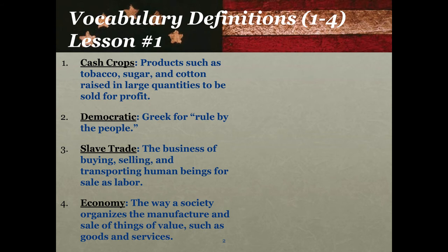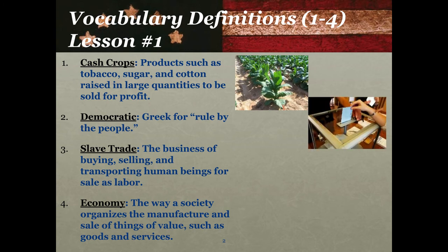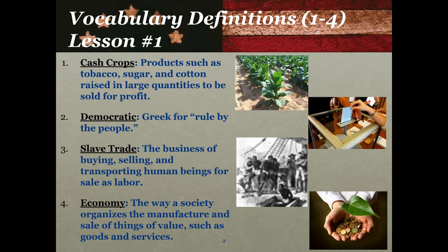I will now make pictures of these words materialize on the screen. That would be a cash crop — in that case, tobacco. When we think of democracy, we think of voting; that is how we exercise our democratic rights. Slave trade I probably don't need to describe. And the economy — most of us think of money, but the economy has to do with a lot more than that. We will talk about that as time goes on.